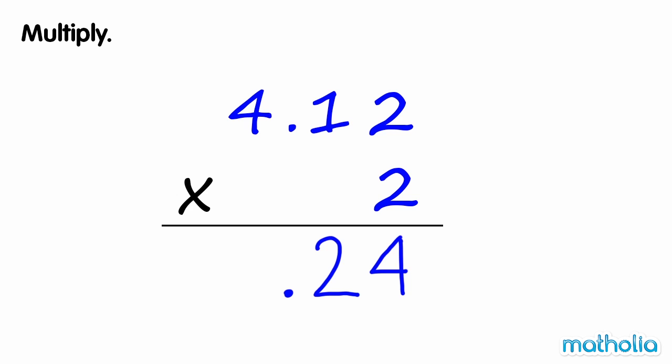Multiply the ones. 2 times 4 ones equals 8 ones. So 4.12 times 2 equals 8.24.